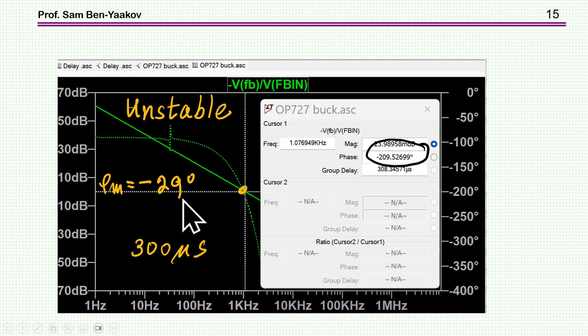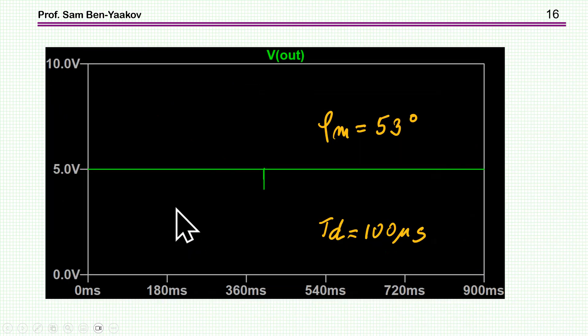Now, as the saying goes, the proof of the pudding is in the eating. So let's run now some time domain simulation to see if indeed we see this behavior in the time domain. So I'm first running a time domain simulation with a delay of 100 microseconds, which implies the phase margin of 53 degrees, which is okay. So I'm looking just at the output. This is the step load. There is a change here.